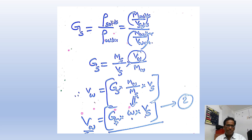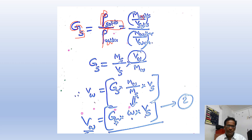Now let us see what specific gravity of soil solids is: it is the density of solids divided by density of water. Density of solids means mass of solids by volume of solids. Similarly, density of water is mass of water by volume of water. After rearranging, specific gravity Gs equals (Ms / Vs) times (Vw / Mw).